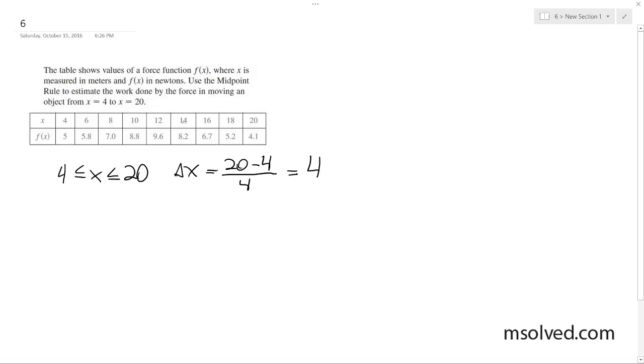So in this case, what that means is starting off here, we're going to have from 4 to 8, from 8 to 12, from 12 to 16, and 16 to 20. So we'll have 6, 10, 14, and 18 as our points, and we have 4 points.